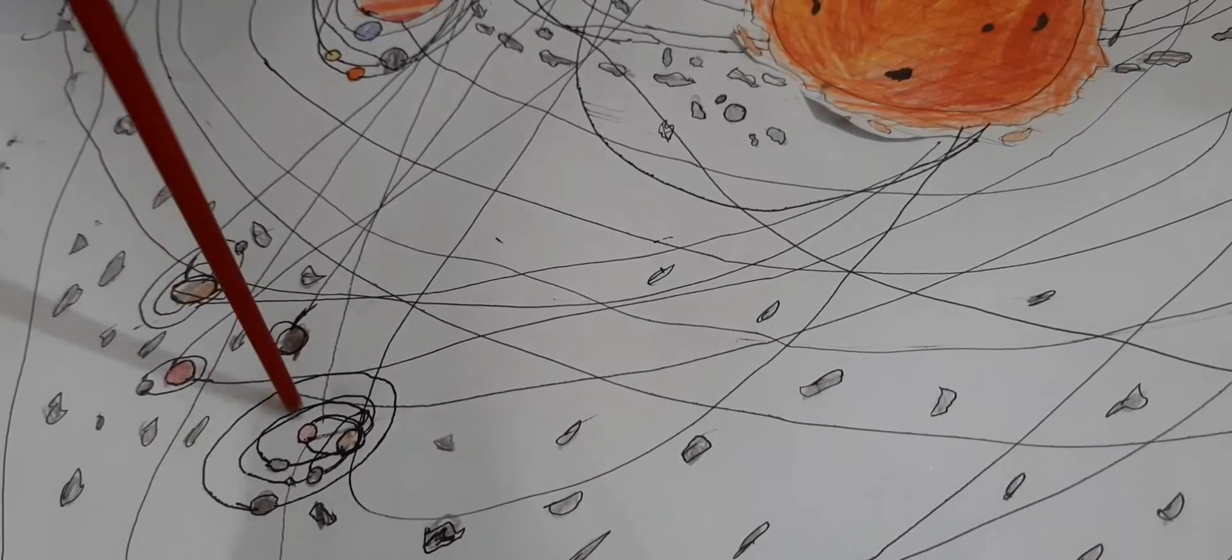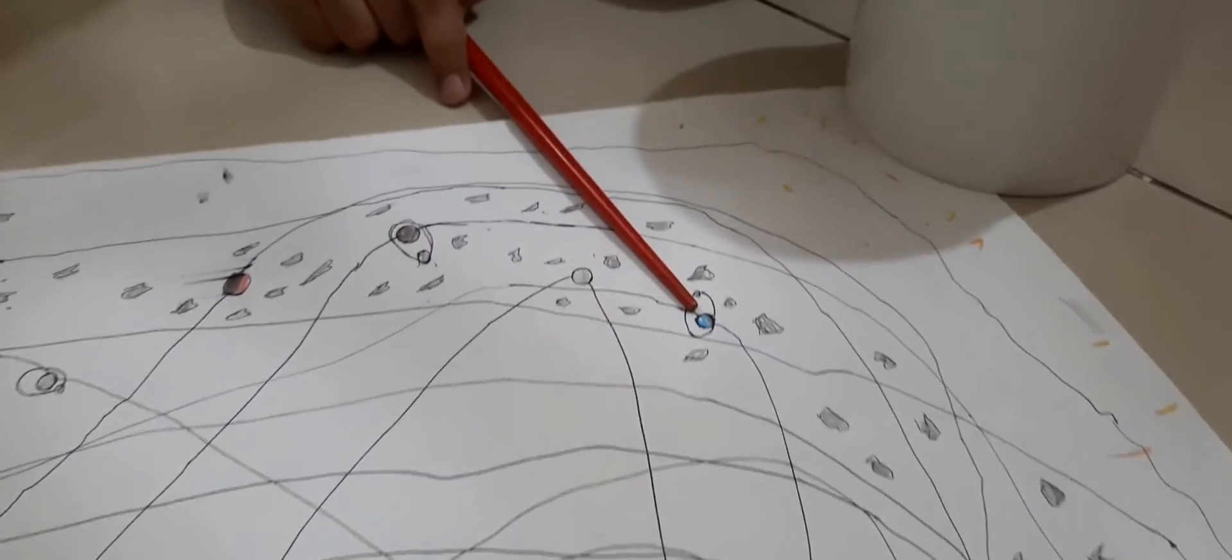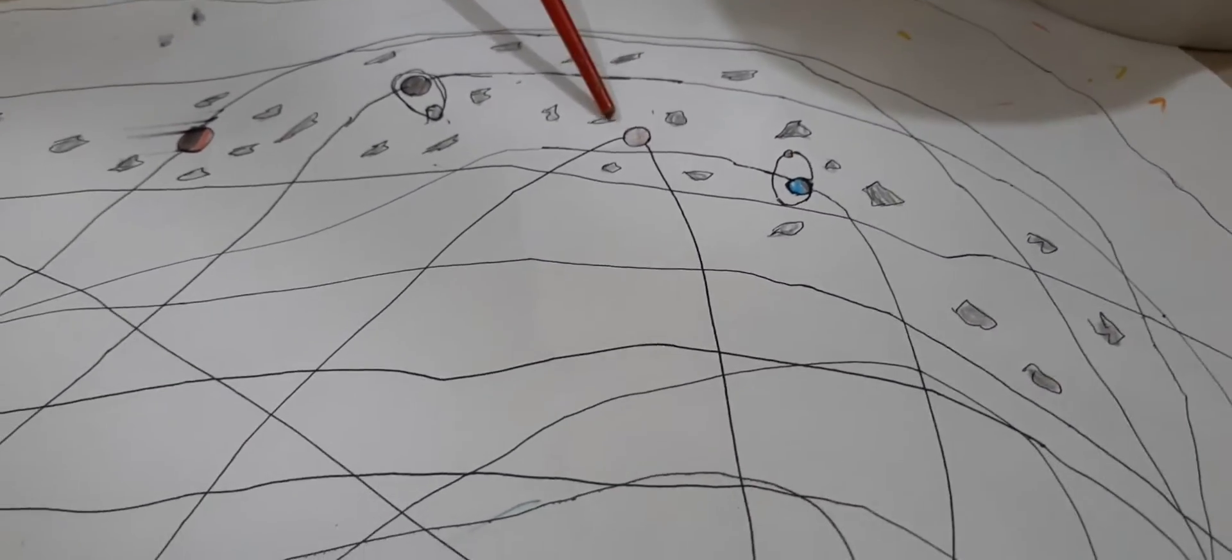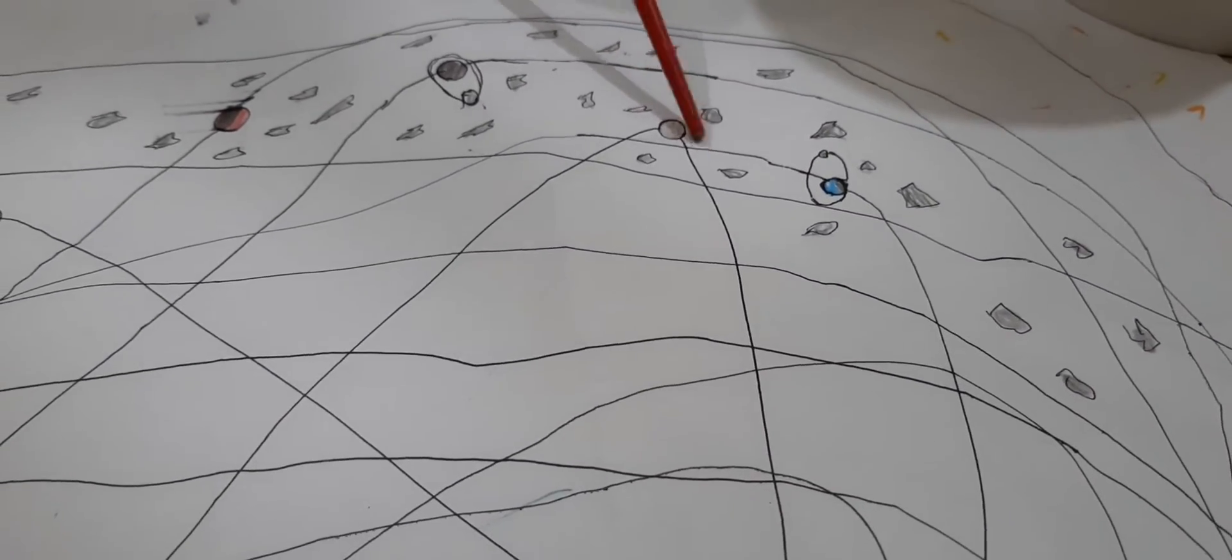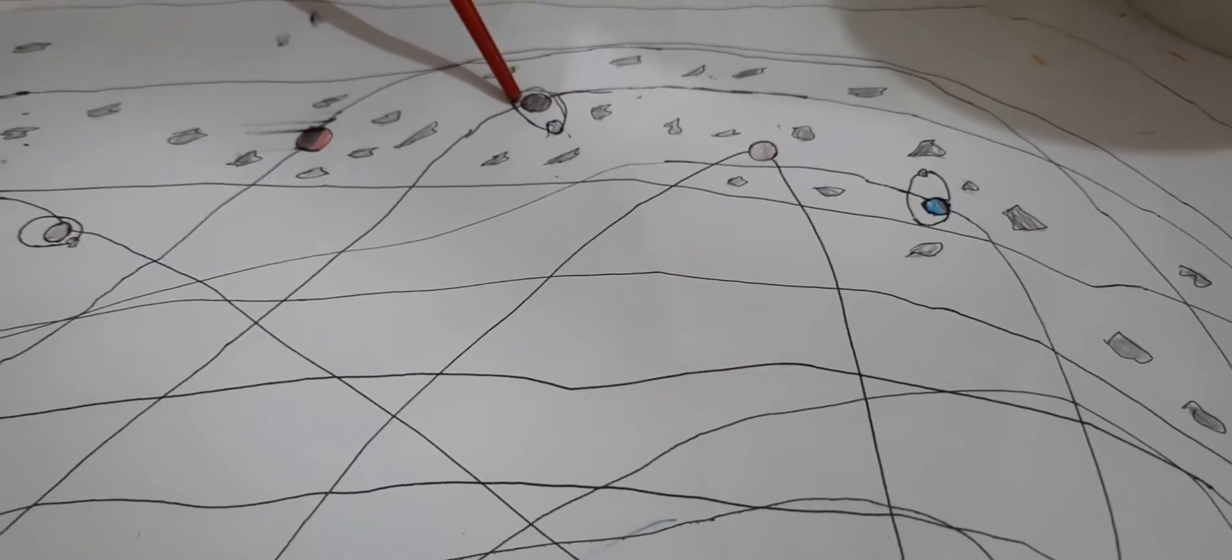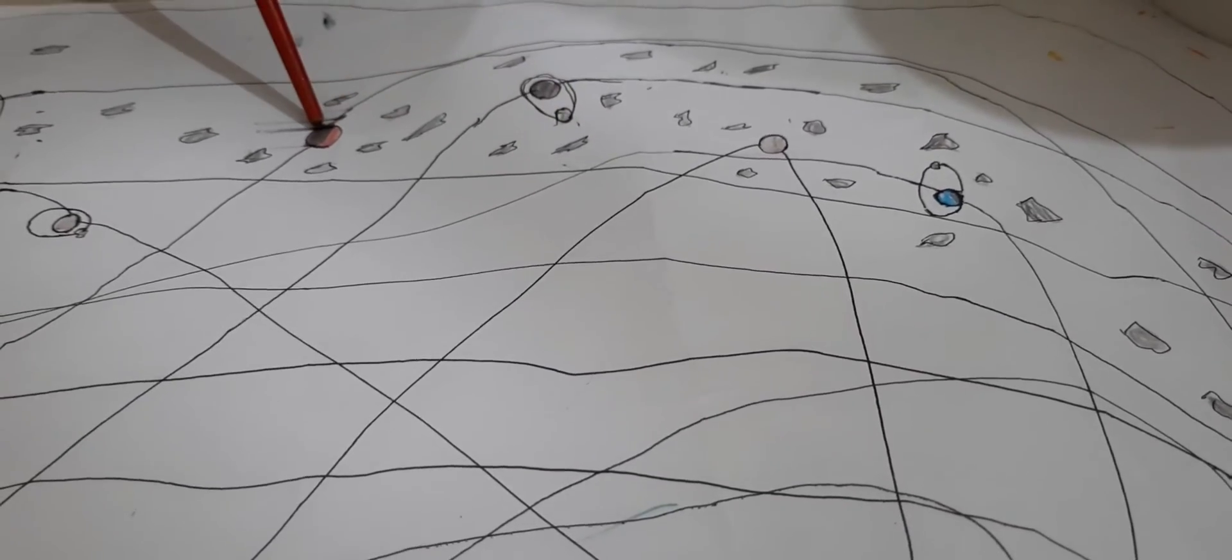And it also has rings. And now we go down here. Here's Orcus, not a literal orcas. It's 2002 MS4. Yes, it has a big name. Here is Salacia. Here's Sedna.